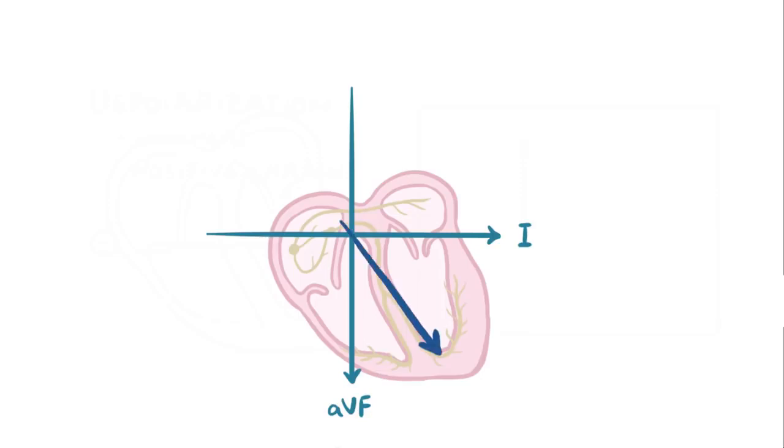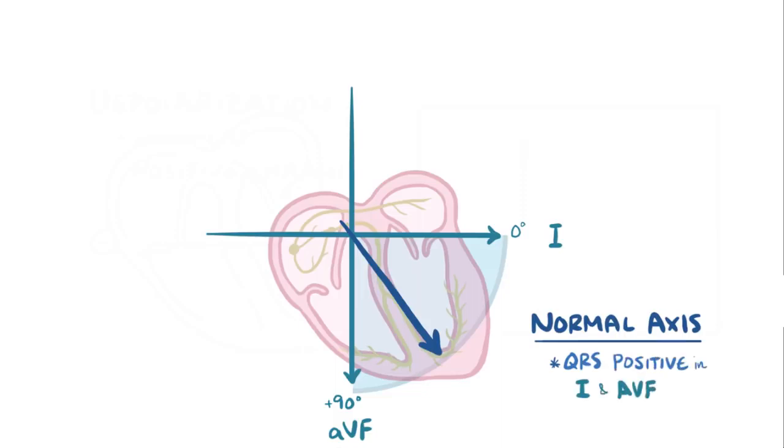Looking at our overall vector from before, it's pointing both down and to the left, both positive, so it's in the bottom left quadrant between 0 and plus 90 degrees, and that's a normal axis. If it's positive or up on an ECG in one in AVF, you can imagine that's like seeing two thumbs up, meaning that everything's okay.